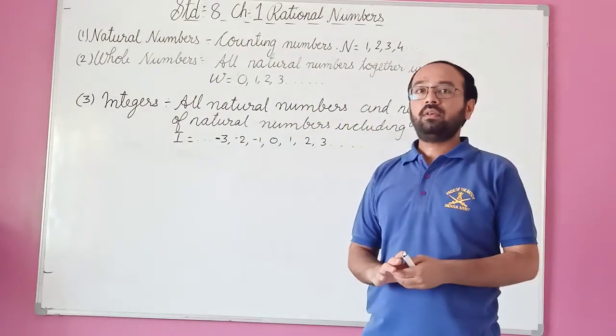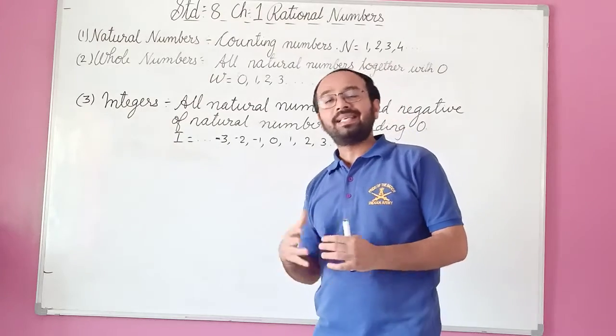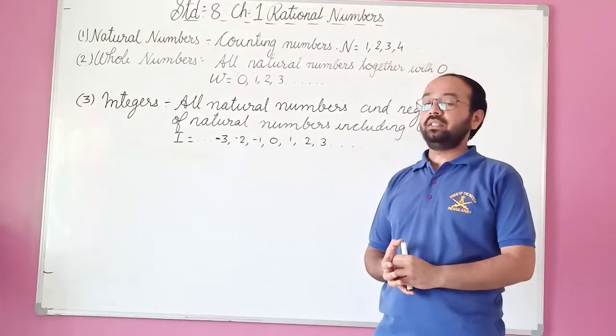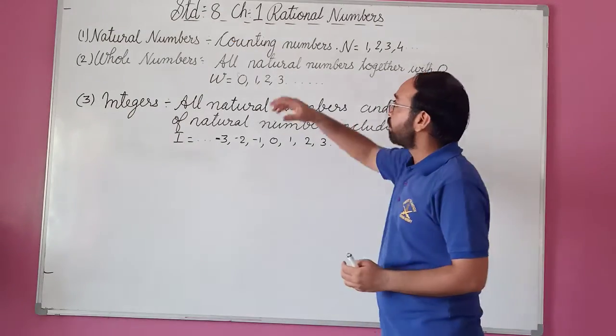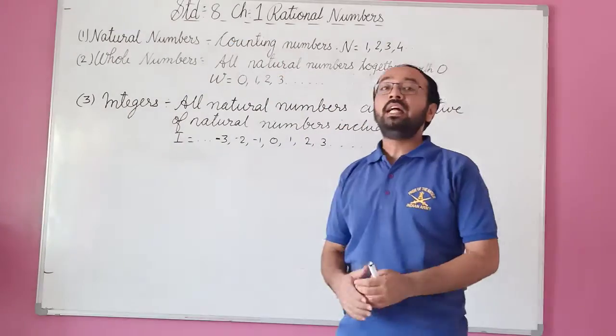So integers are of two types, positive integers as well as negative integers. So this was the revision of Math Chapter number 1, the rational numbers.